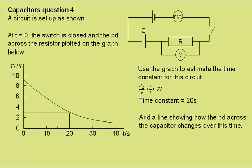We'll add a line showing how the potential difference across the capacitor changes over this time. Well in the circuit we have the power supply in series with the capacitor and the resistance and so the potential difference of the power supply will be shared between the two. It will always add to 9 volts.